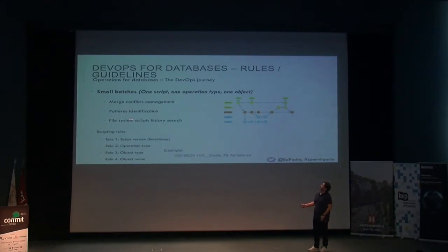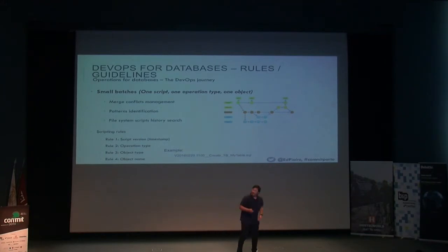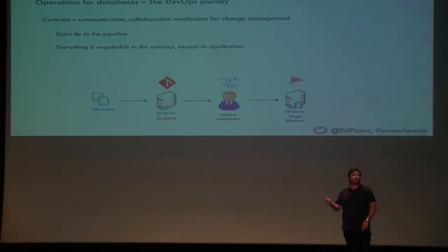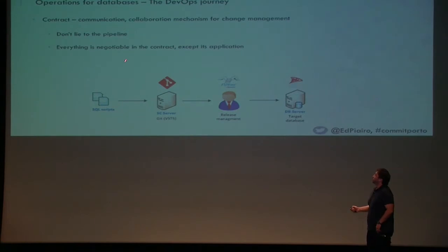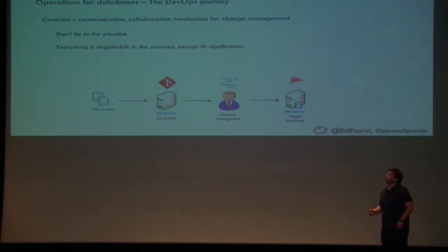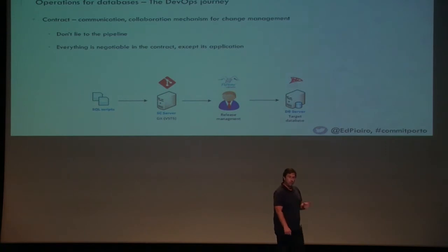A funny thing also: we started to identify patterns. You start to drop migrations and already anticipate what will happen in the database. So we — I call it — we established a contract. It's nothing more than a mechanism we use to communicate and collaborate between different teams around the database. The first rule: don't lie to the pipeline. We didn't take much effort to go around the pipeline. And the second point: everything is negotiable. If the pipeline is not working for you, we need to change the pipeline. The pipeline should work for everyone involved in the process.